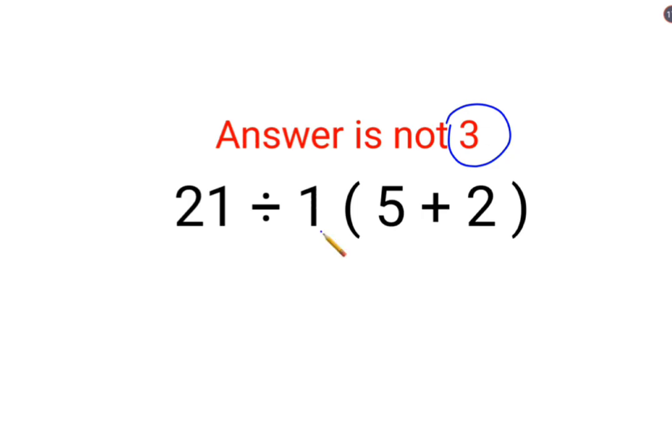21 divided by 1 and then we have 5 plus 2. Everyone knows that when you have these kind of sums, we need to first figure out the brackets. So we keep the rest of the question as it is. And 5 plus 2 is 7.